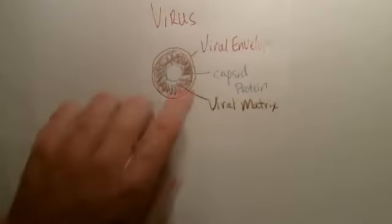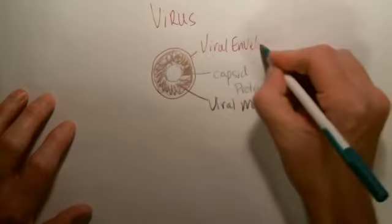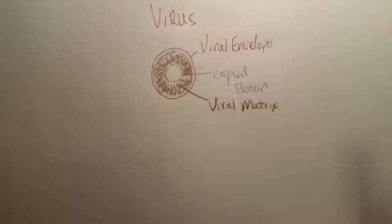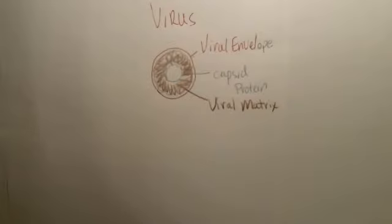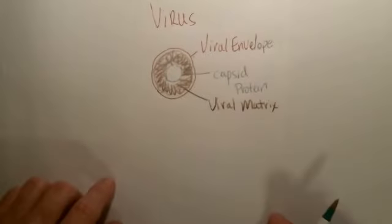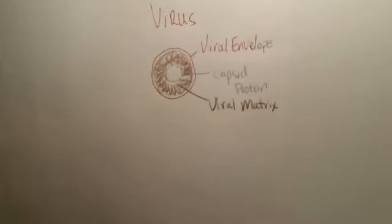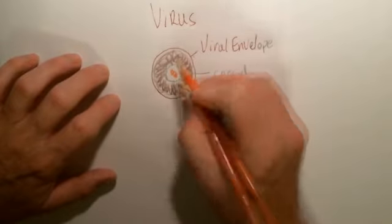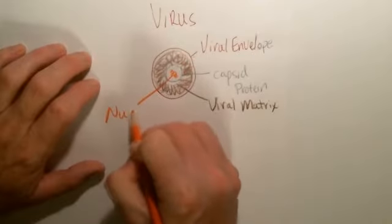The viral envelope has a very special function: to have proteins on it so that it can unlock — like a key unlocks a door — a cell, so that it can get inside that cell, get it infected, and be replicated. Inside the viral capsid, in the very innermost part, is the nucleic acid.